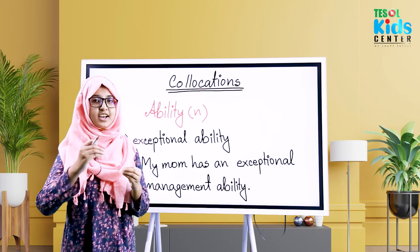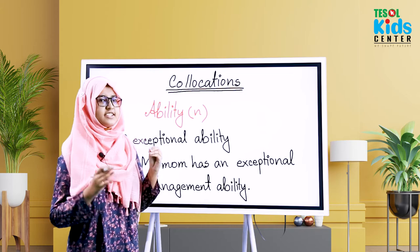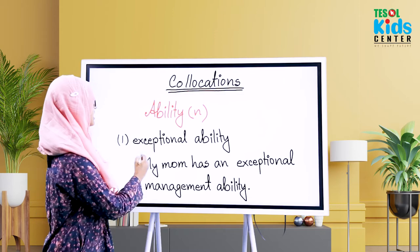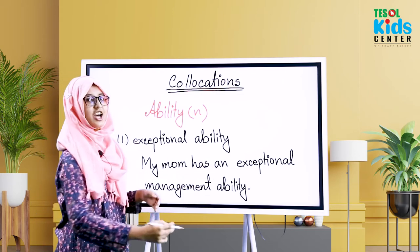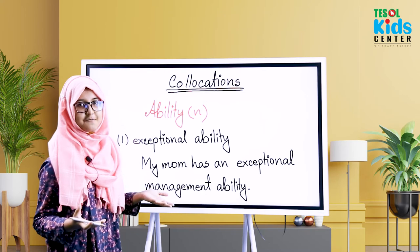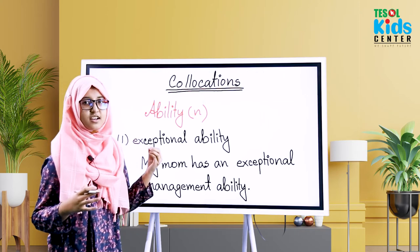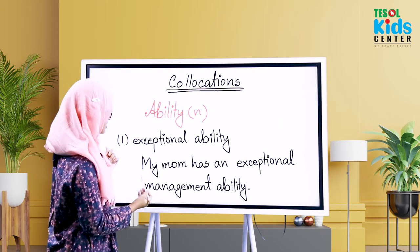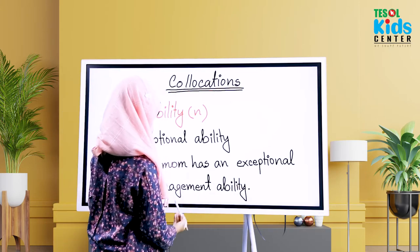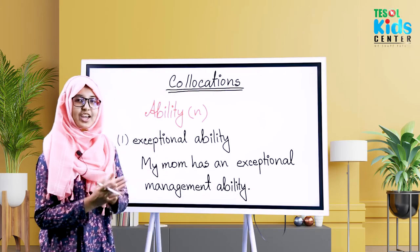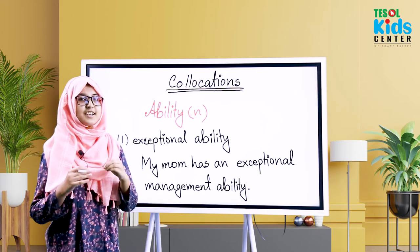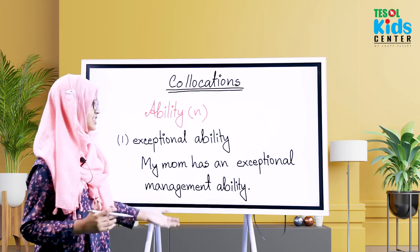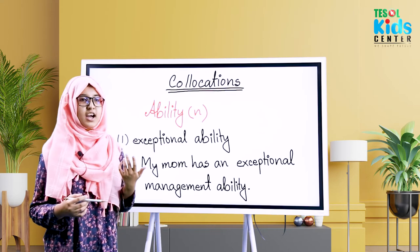Now let's see some collocations of 'ability.' The first one is 'exceptional ability' — something which is exceptional compared to normal people. For example: 'My mom has an exceptional management ability,' meaning my mother has something exceptional that others don't have — and that thing is management. We can also say something like, 'I have an exceptional ability of presentations.'